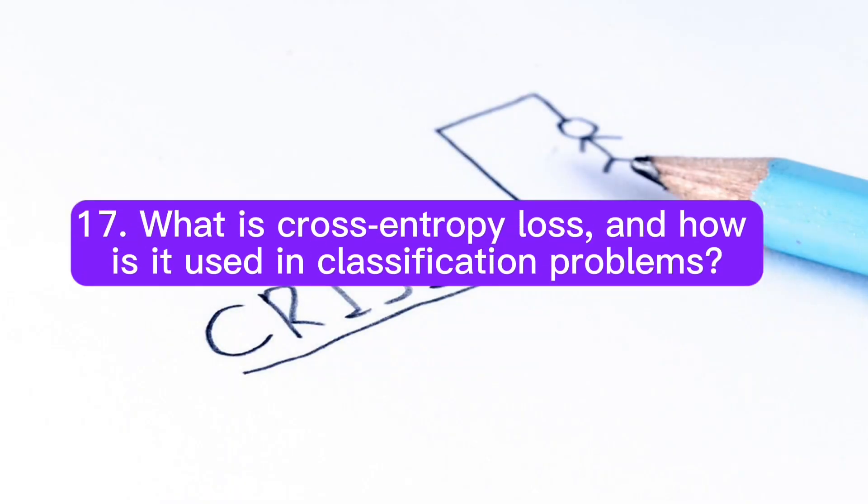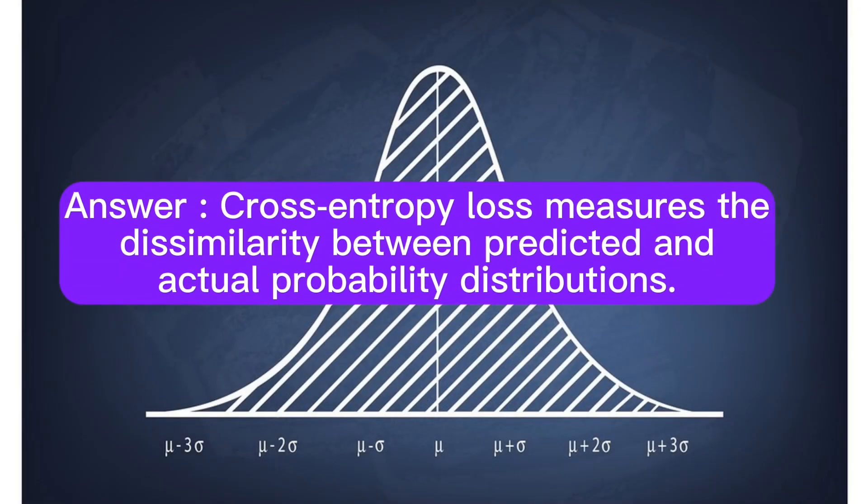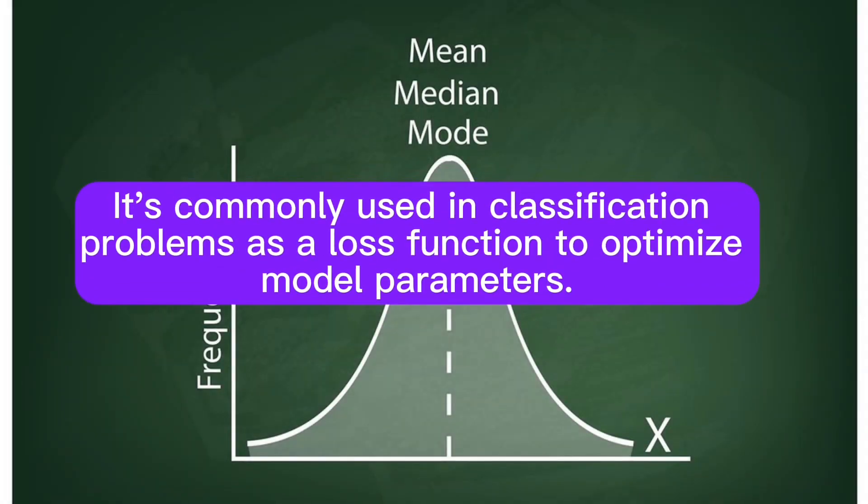Question 17: What is cross-entropy loss and how is it used in classification problems? Answer: Cross-entropy loss measures the dissimilarity between predicted and actual probability distributions. It's commonly used in classification problems as a loss function to optimize model parameters.